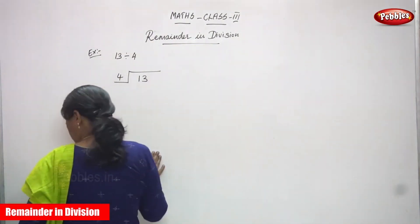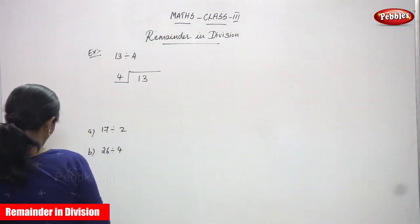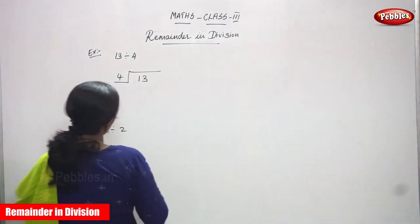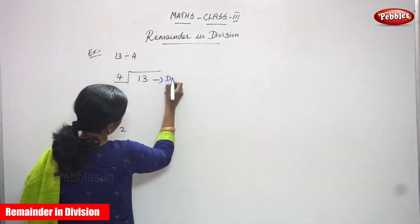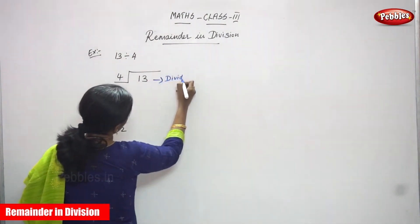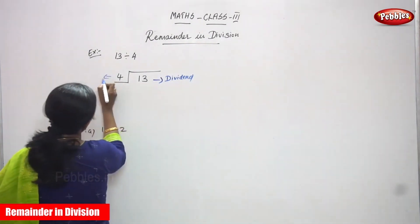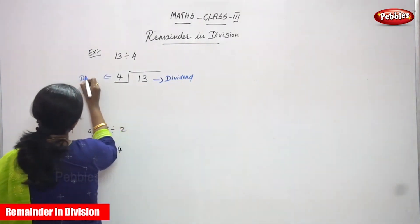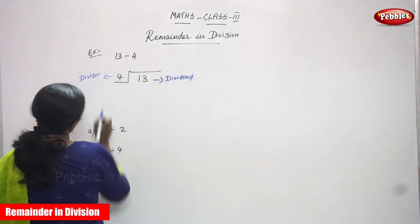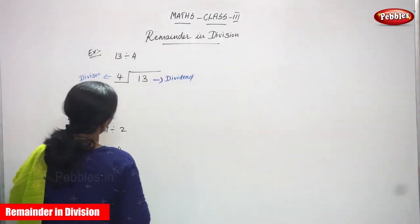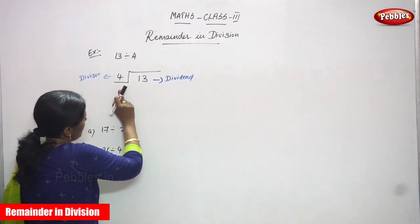13 is going to be divided by 4. So 13 is the dividend — D-I-V-I-D-E-N-D — and 4 is the divisor. Look at these numbers: 13 is going to be divided by 4.